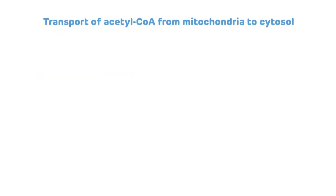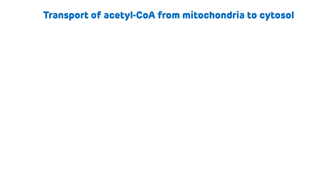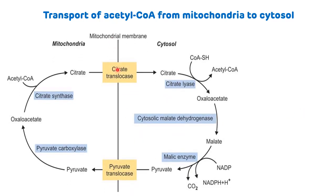Acetyl-CoA is synthesized from pyruvate inside the mitochondria. The inner mitochondrial membrane is impermeable to acetyl-CoA, so acetyl-CoA first condenses with oxaloacetate via citrate synthase to form citrate. Citrate then crosses the inner mitochondrial membrane via citrate translocase. In the cytosol, citrate is converted back to oxaloacetate and acetyl-CoA by the citrate lyase enzyme, and this acetyl-CoA is used for de novo fatty acid synthesis.